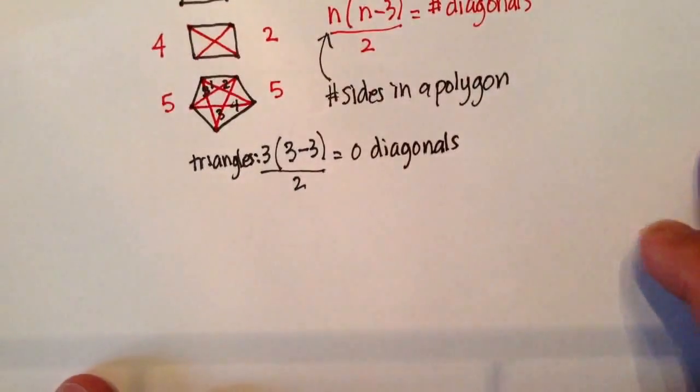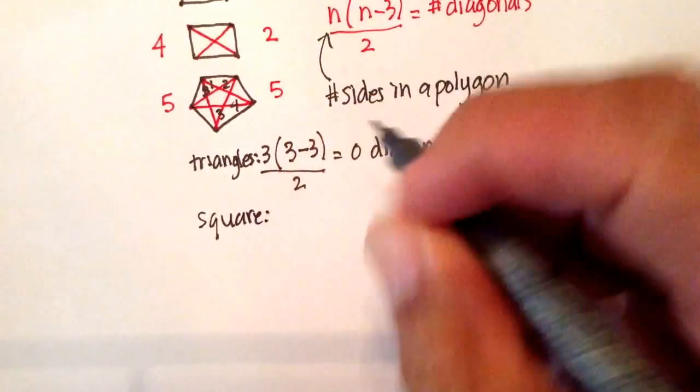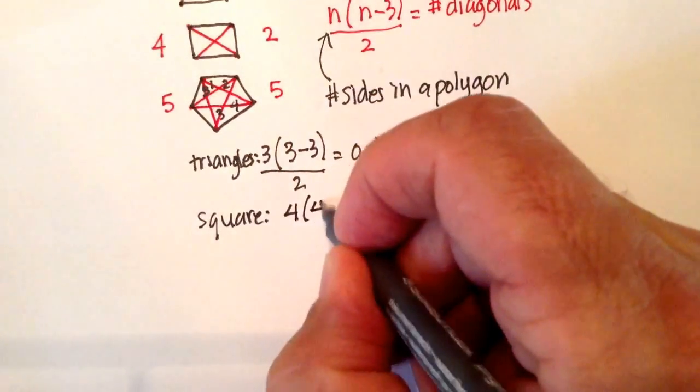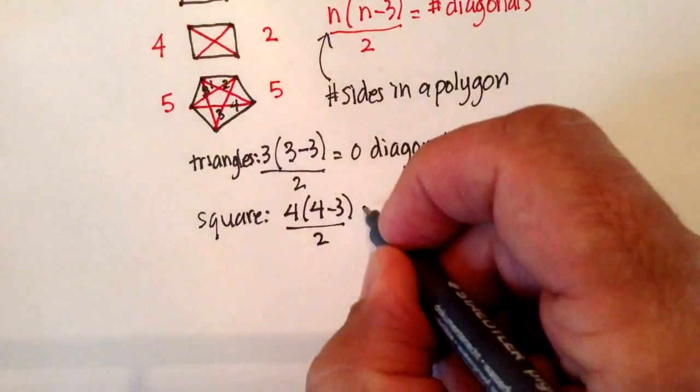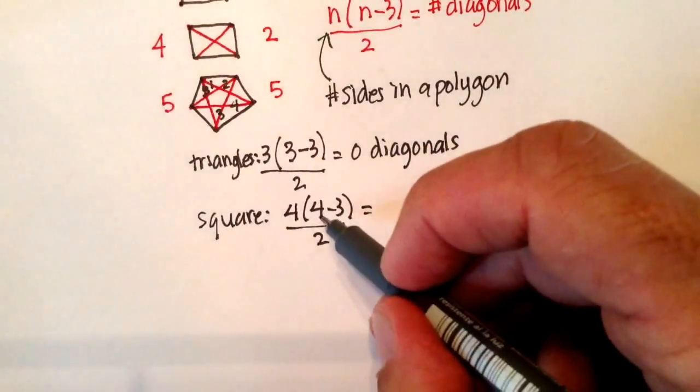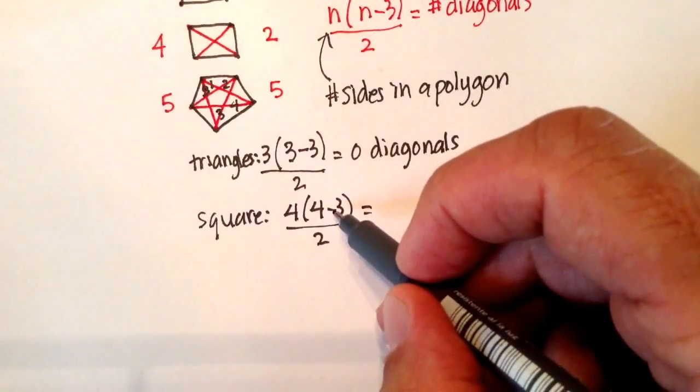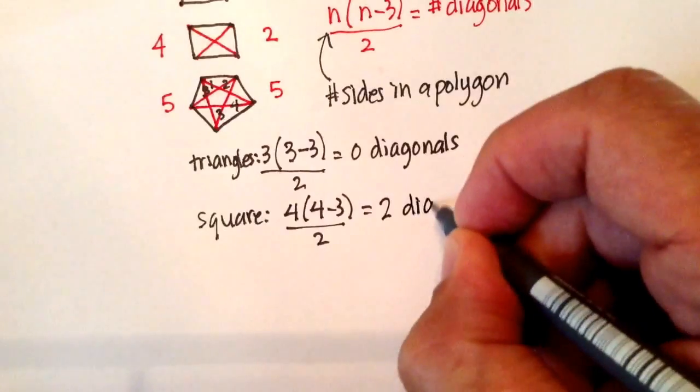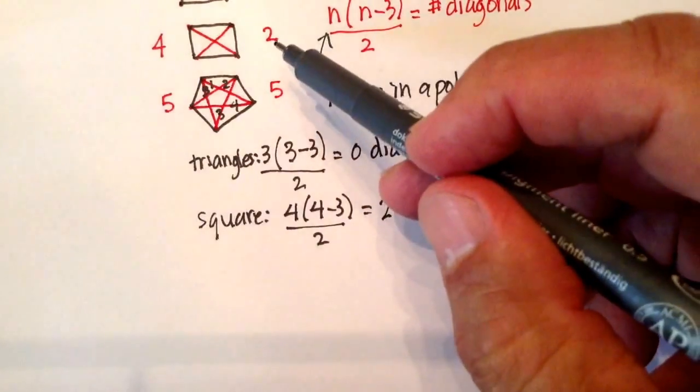Let's go to a square. We said that in a square we have four sides, so N is 4. 4 minus 3 divided by 2. Let's count it out. 4 minus 3 is 1. 4 times 1 is 4. 4 divided by 2 is 2 diagonals. So again, looks like the pattern is still holding.